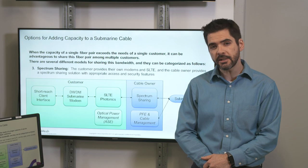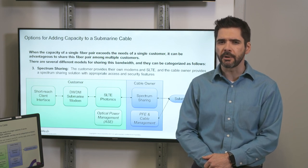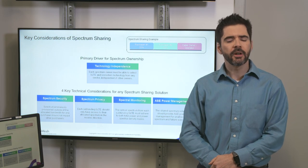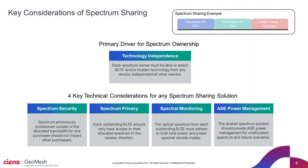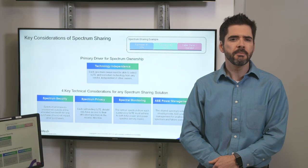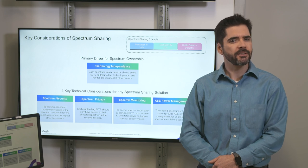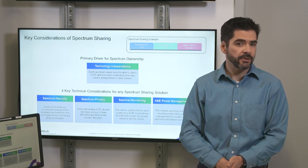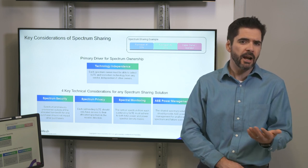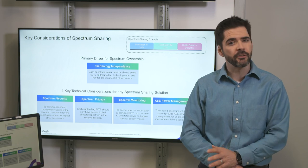Now that we understand the context of spectrum sharing, what are the technical requirements for this kind of solution? Here we will discuss the four pillars of spectrum sharing — the key technical considerations important for all spectrum sharing solutions. First, we have spectrum security. This pillar stipulates that the spectrum sharing solution must be architected such that each user is as independent as possible. In the transmit direction, if one user erroneously provisions spectrum outside of their allocated bandwidth, it should not impact any other purchasers.